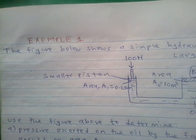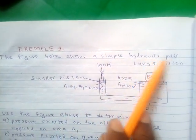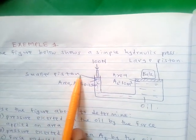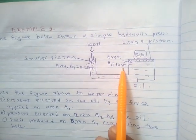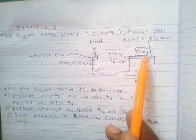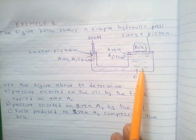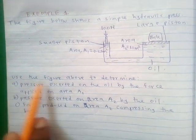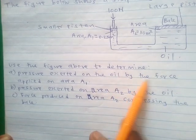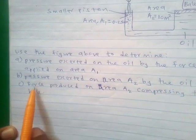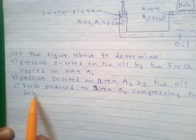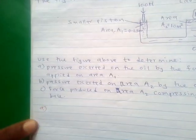We look at an example involving a calculation using a hydraulic press. The figure shows a hydraulic press where the force on the smaller piston is 100 Newton, area A1 is 0.25 square meter, and area A2 is 10 square meter. We are required to determine: part A, the pressure exerted on the oil by the force applied on A1; part B, the pressure exerted on A2 by the oil; and part C, the force produced on A2 compressing the bale.